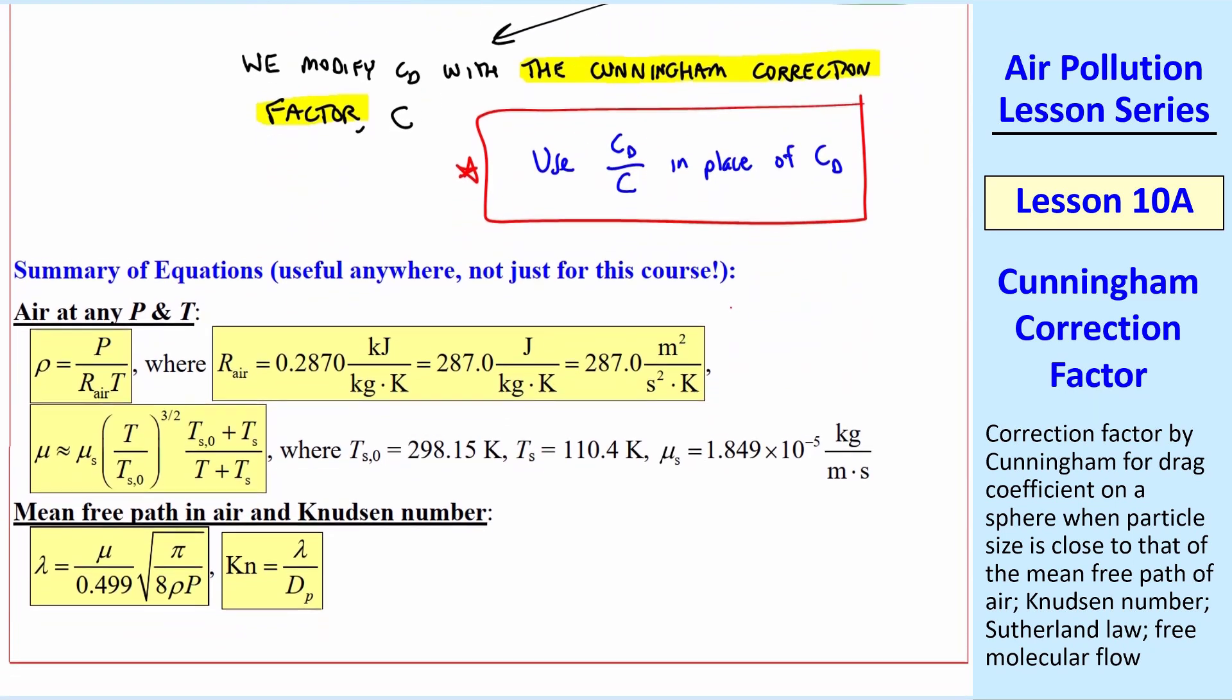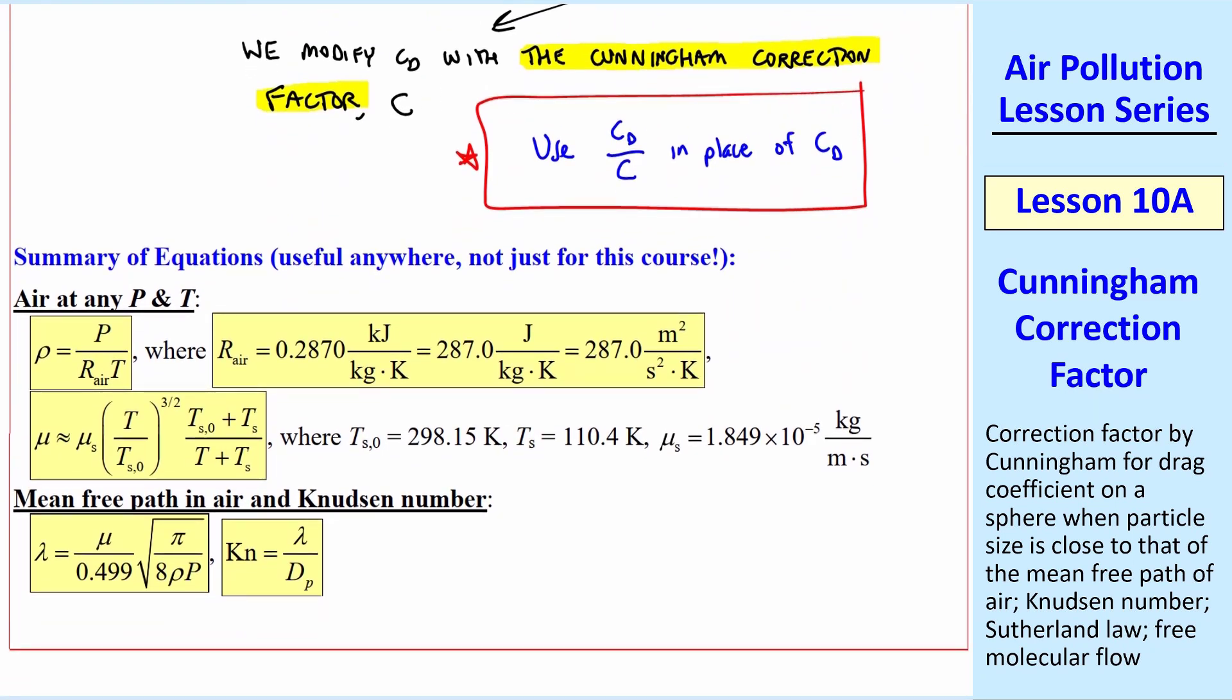First, I want to show the summary of equations for air at any pressure and temperature. We have the ideal gas equation with a specific gas constant for air in any of these three groupings of units. This viscosity equation is the Sutherland equation, where these are the constants in the equation that appear here. This is the equation for mean free path for air and Knudsen number. So this grouping of equations is valid for air at any pressure and temperature. And notice that we need mu, density and pressure to calculate lambda. And we need lambda, then, to calculate the Knudsen number.